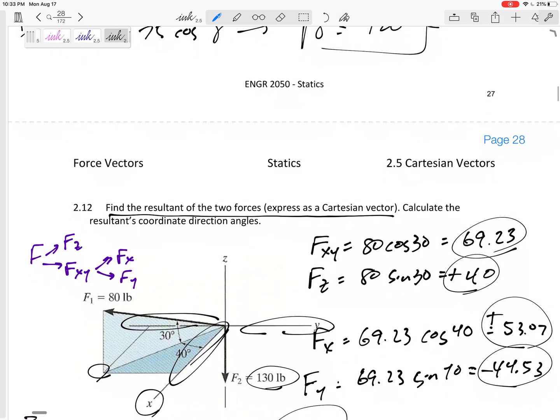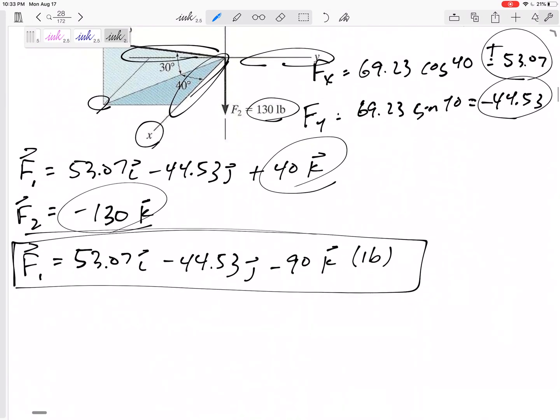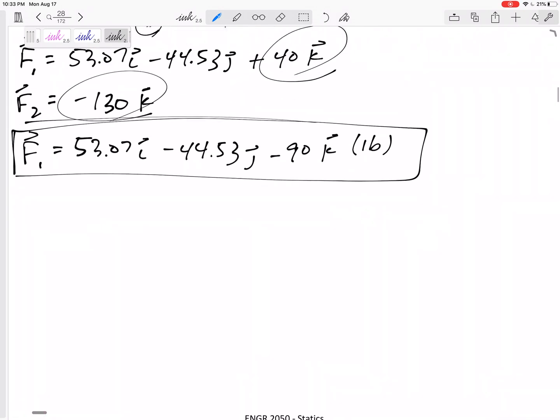Now calculate this one's coordinate direction angle. So what do I do for coordinate direction angles? And maybe I should write this as R, that's not f1, that is the resultant. All right, now if it was F equals R u, I've got the R right here, do I have this?